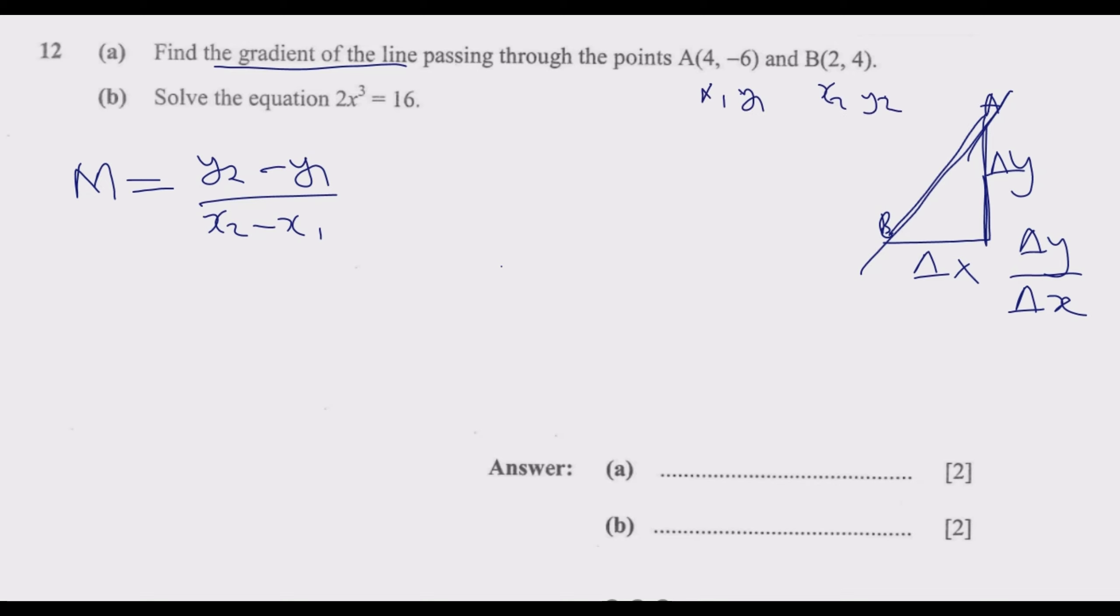We'll call the first point x1, y1 and the second point x2, y2. So y2 in this case is 4. It will be 4 minus y1 which is -6. So it's minus negative 6. Then divide by x2 which is 2, so 2 minus x1 which is 4.